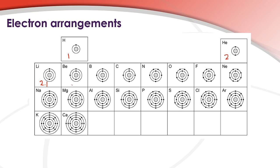Next we have beryllium which is 2.2 and then boron 2.3, carbon 2.4, nitrogen 2.5, oxygen 2.6, fluorine 2.7 and then the noble gas neon which is 2.8.